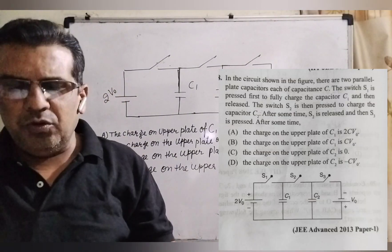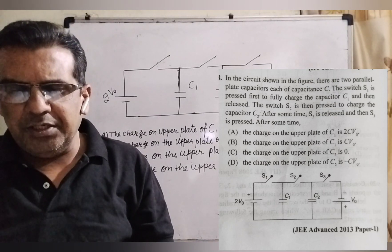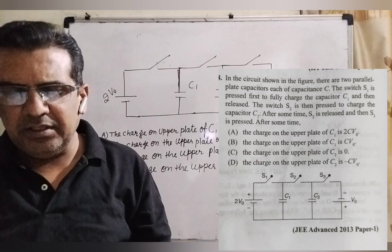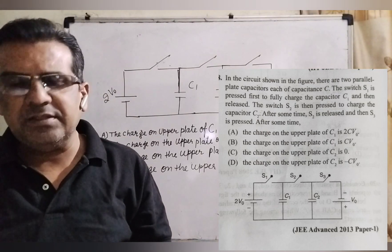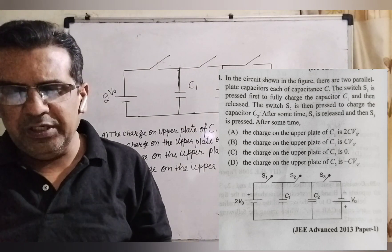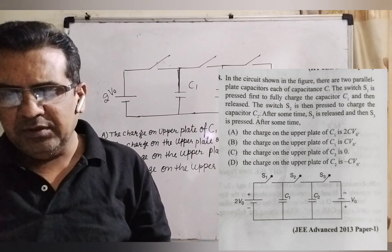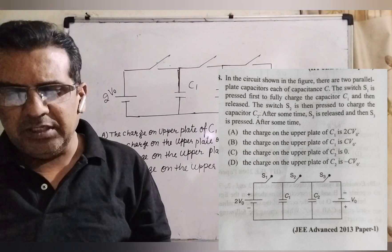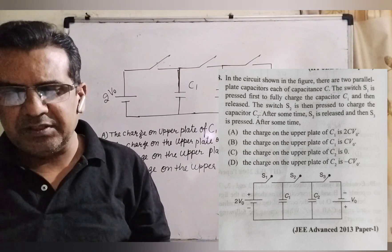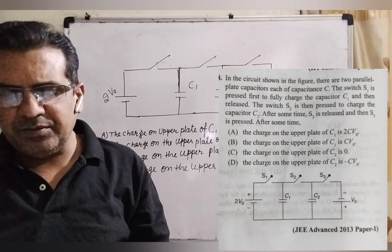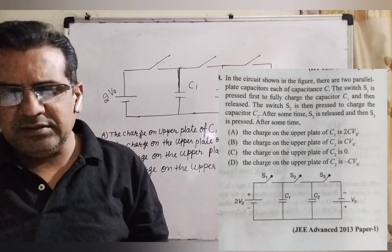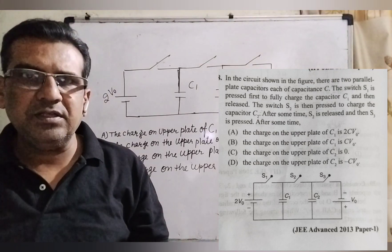Here the question is: in the circuit shown in the figure, there are two parallel plate capacitors, each of capacitance C. The switch S1 is pressed first to fully charge the capacitor C1, and then released. The switch S2 is then pressed to charge the capacitor C2. After some time, S2 is released and then S3 is pressed after some time.